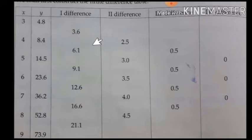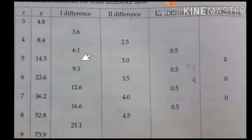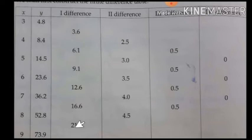For the second difference column, take differences between consecutive first difference values: 6.1 minus 3.6 gives 2.5; 9.1 minus 6.1; 12.6 minus 9.1 gives 3.5; 16.6 minus 12.6 gives 4; and 21.1 minus 16.6 gives 4.5. In the same way, obtain the third and fourth difference columns.